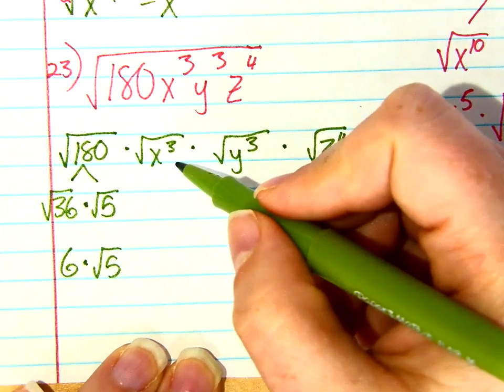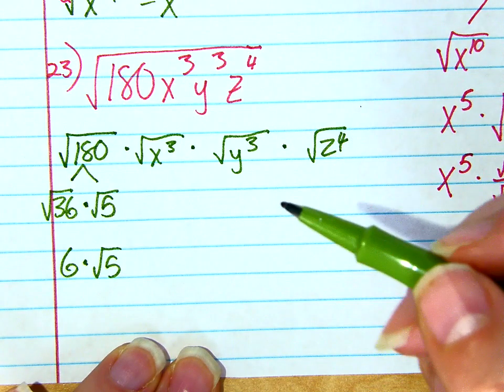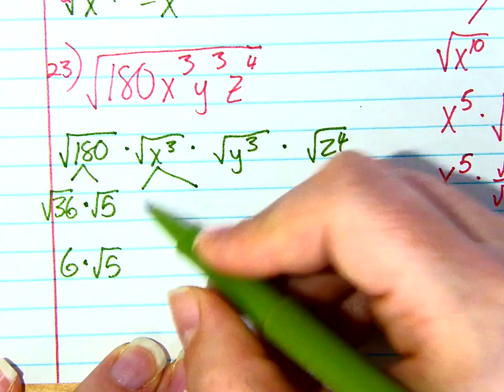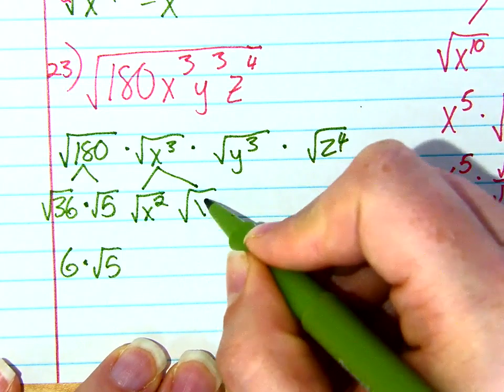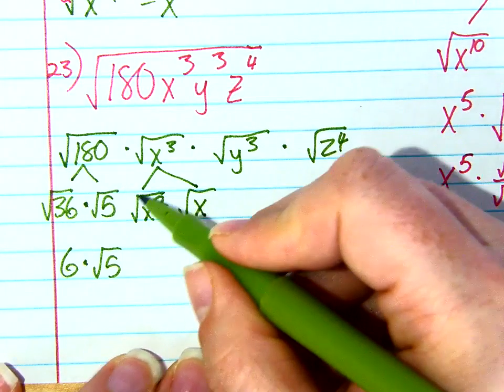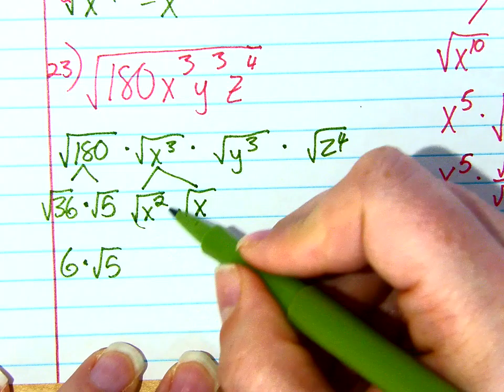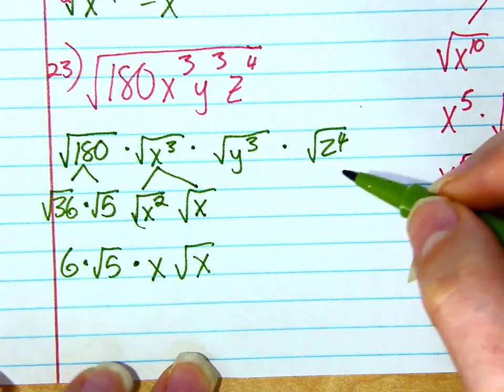Now let's look at x to the third. X to the third is not a perfect square, so I split it up into what? X squared and x to the first. Perfect. What's the square root of x squared? Just x. And then just bring down that square root of x there.